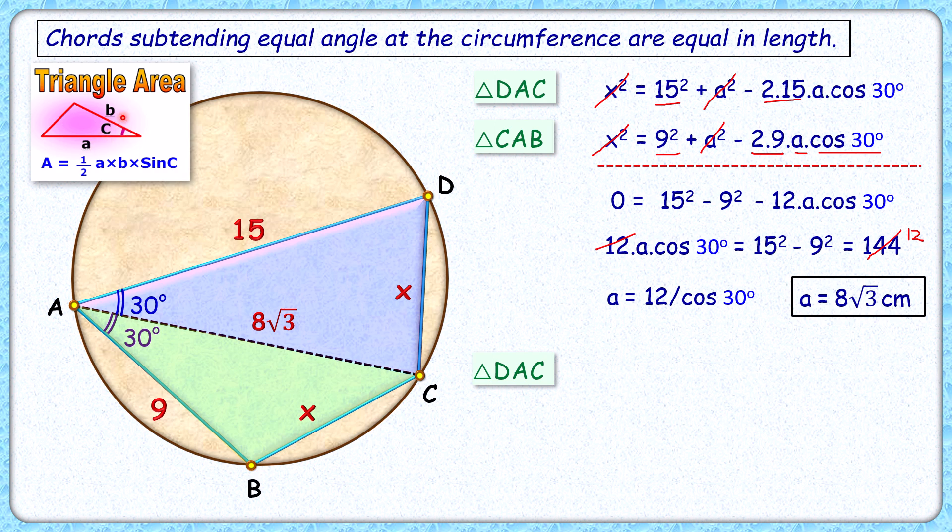Using this formula, the area of the pink triangle is ½ × 15 × 8√3 × sin 30°. Putting sin 30° as ½ and simplifying, we get 30√3 cm².